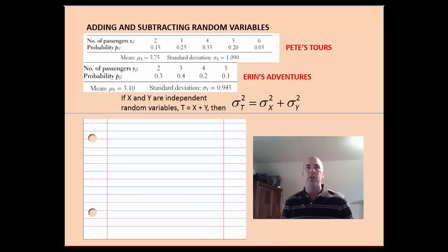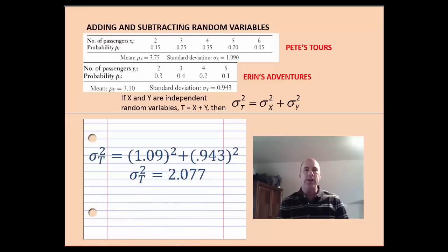What this rule essentially says is, to find the standard deviation of a combined distribution, you have to add the variances. And then we'll take the square root of that to get the combined standard deviation. So putting that all together, that means the variance of the total is 1.09 squared, that gives us the variance for Pete's Tours, plus 0.943 squared, that gives us the variance for Erin's Adventures. We can add those together. We take the square root of that, and we can find that the standard deviation of the combined distribution is 1.44.